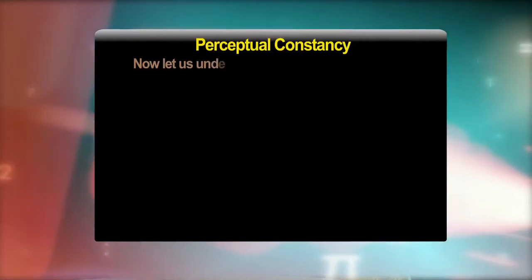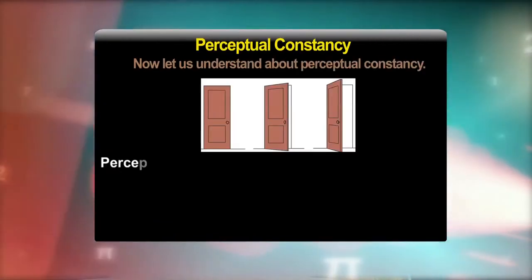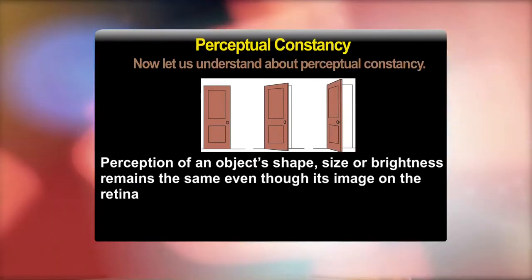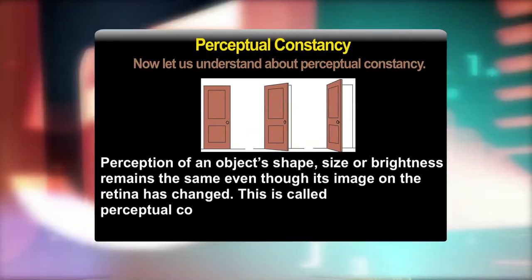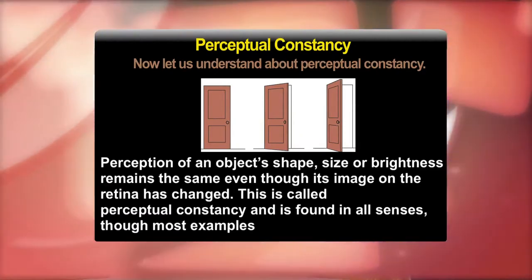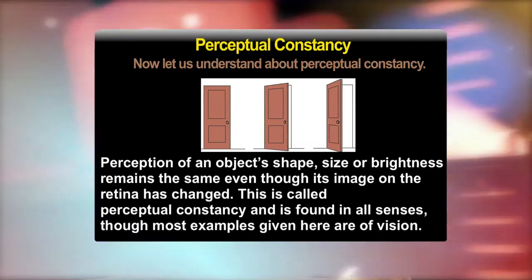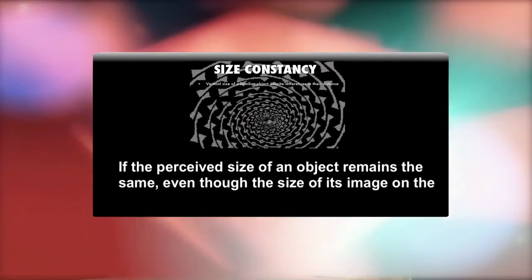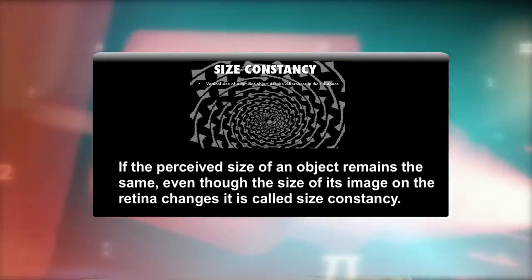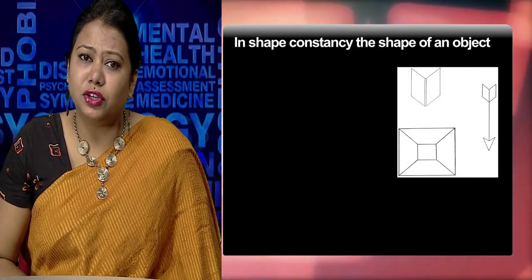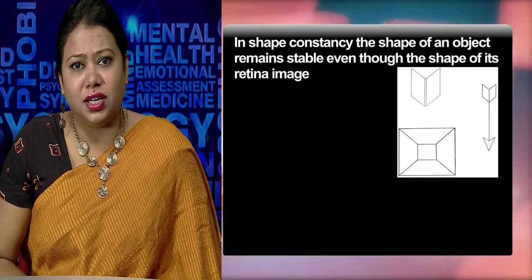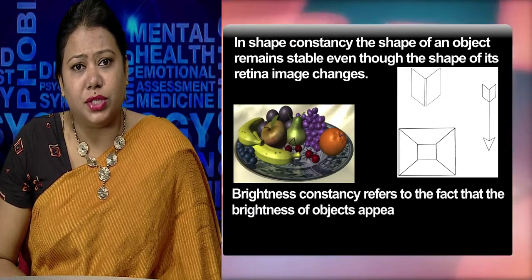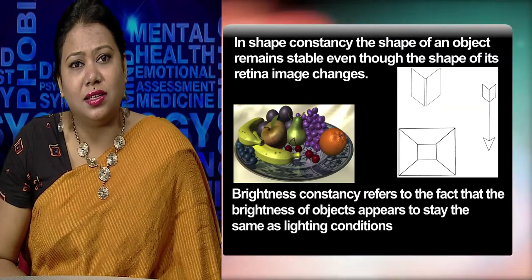Perceptual constancy means that our perception of an object's shape, size, or brightness remains the same even though its image on the retina has changed. Size constancy means the perceived size of an object stays the same even if its retinal image changes. In shape constancy, the shape of an object remains stable even though the shape of its retinal image changes. Brightness constancy refers to the fact that the brightness of objects appears to stay the same as lighting conditions change.